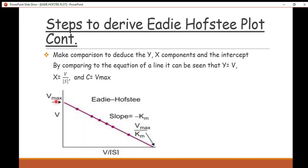On the graph, V_max is the y-intercept, that is the point where the line cuts the y-axis equals V_max. K_m can be calculated by calculating the slope — finding the change in y over the change in x gives you negative K_m. The intercept on the x-axis is also equal to V_max divided by K_m.